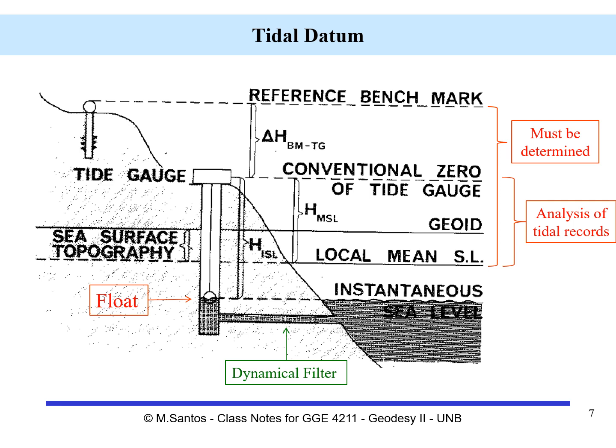What we have here are important elements: the tide gauge itself — I'm using a simple example of a float. There are other more modern ways of operating a tide gauge, but here let's look at using a float with the benchmark close by. There is a canal that lets the water go from the sea to the tide gauge, serving as a dynamical filter — a low-pass filter — because it filters out the short-term variations of the instantaneous sea level.